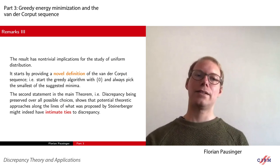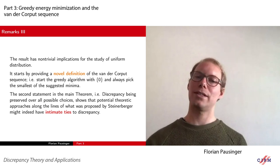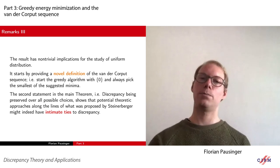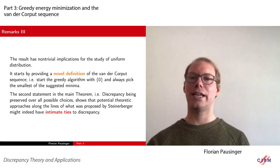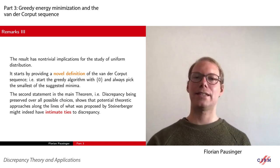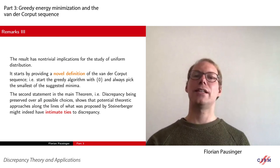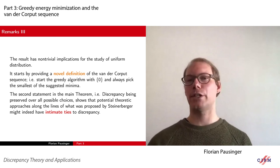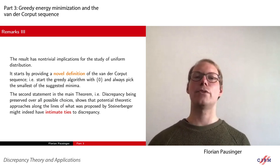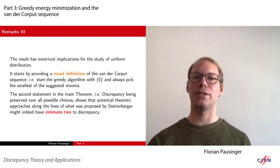This result is interesting because it gives a novel definition of the van der Corput sequence. On the other hand, it shows that potential-theoretic approaches along the lines of what was proposed by Stefan might indeed have very intimate ties to discrepancy theory. There seems to be some interesting phenomenon in the background.